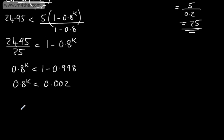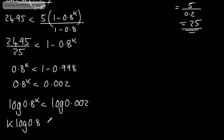Taking logs of both sides, we're going to use base 10. We've got log of 0.8 to the power of k is less than log of 0.002. Bringing the power down, we've got k log 0.8 is less than log of 0.002.